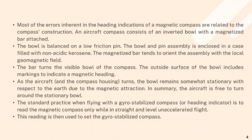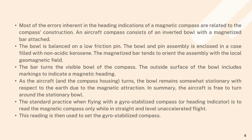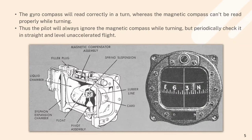In summary, the aircraft is free to turn around the stationary bowl. The standard practice when flying with a gyro-stabilized compass or heading indicator is to read the magnetic compass only while in straight and level unaccelerated flight. This reading is then used to set the gyro-stabilized compass. The gyro compass will read correctly in a turn whereas the magnetic compass can't be read properly while turning. Thus, the pilot will always ignore the magnetic compass while turning but periodically check it during straight and level unaccelerated flight.